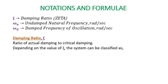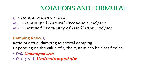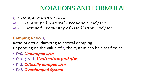The damping ratio is the ratio of actual damping to critical damping. Depending on the value of ζ, the system can be classified as: undamped system when ζ = 0; underdamped system when 0 < ζ < 1; critically damped system when ζ = 1; and overdamped system when ζ > 1. These are the four categories based on the value of zeta.